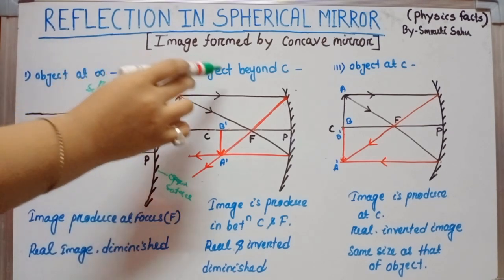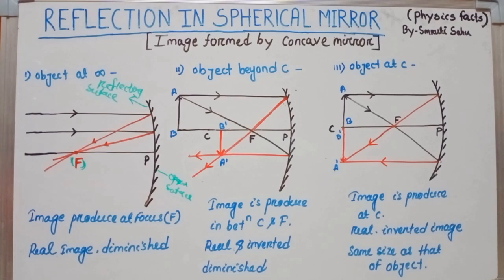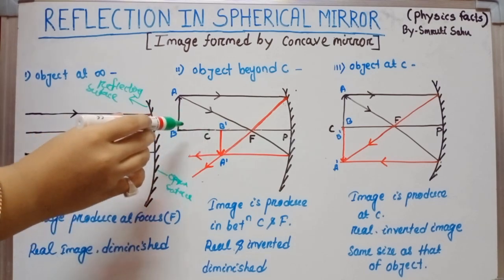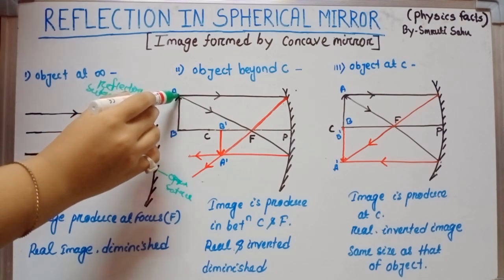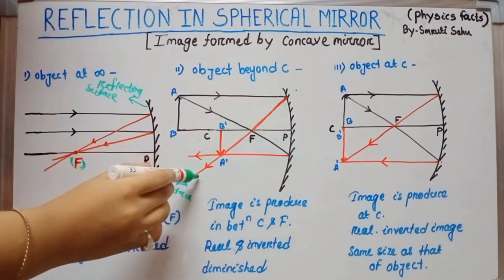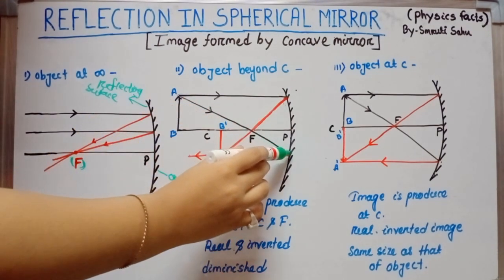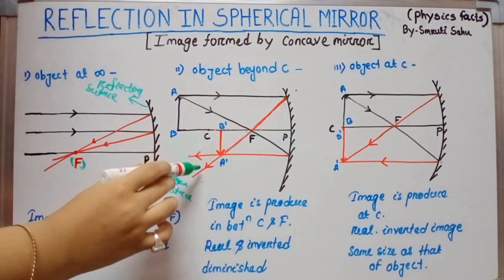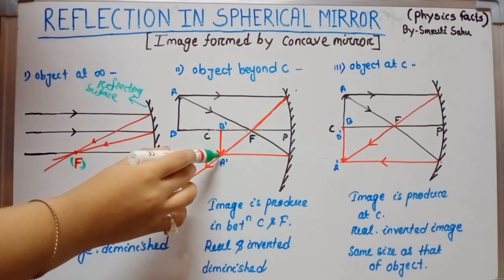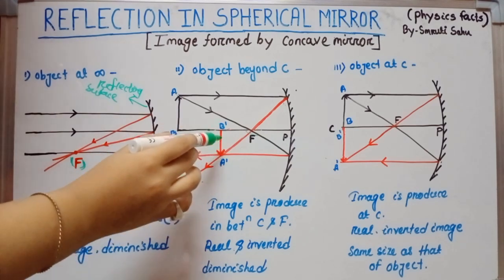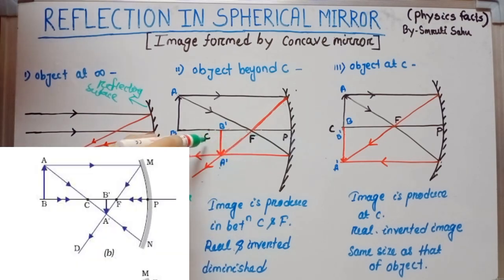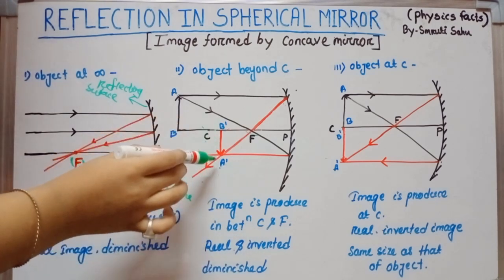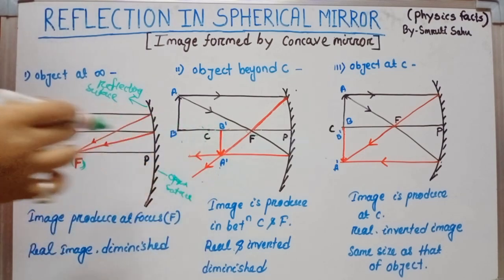Now the second case: object is beyond the center of curvature C. Take one incident ray parallel to the principal axis; after reflection it goes through focus. Another incident ray passes through focus; after reflection it goes parallel to the principal axis. These two reflected rays meet at a point between C and F, where the image is produced. The image is real, inverted, and diminished — smaller than the object.